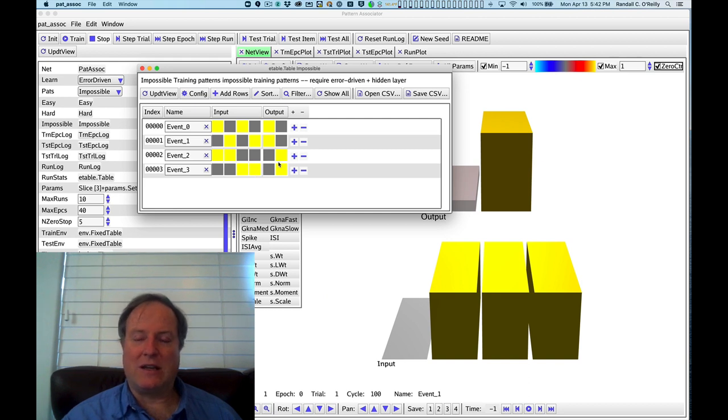So the two inputs that both map to the left output unit have no overlap, as do the two that map to the right output unit. There's nothing in common between them, and yet we want to associate them with the same output at the higher level.